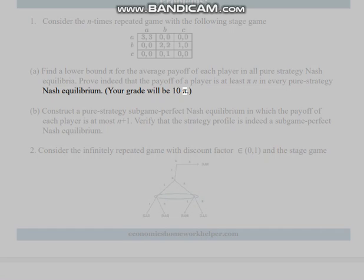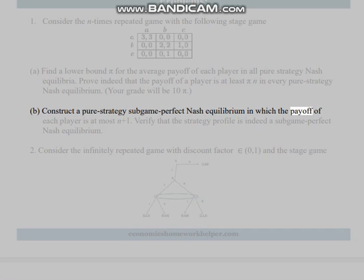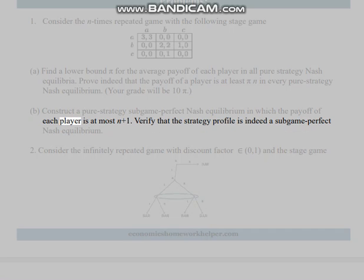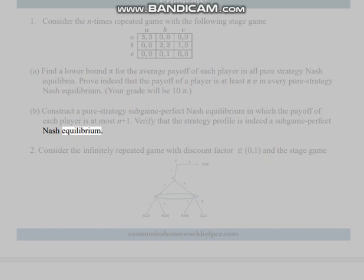Your grade will be 10π(n). Part (b): Construct a pure strategy subgame perfect Nash equilibrium in which the payoff of each player is at most n+1. Verify that the strategy profile is indeed a subgame perfect Nash equilibrium.